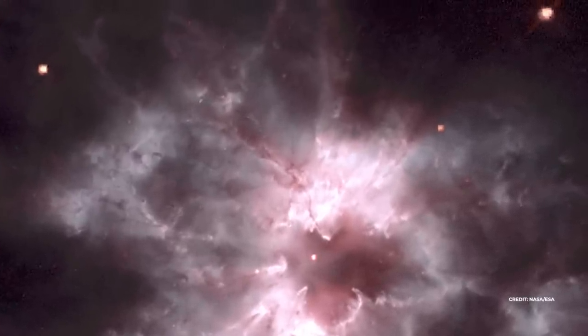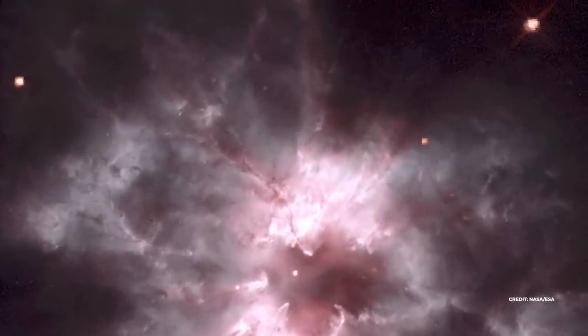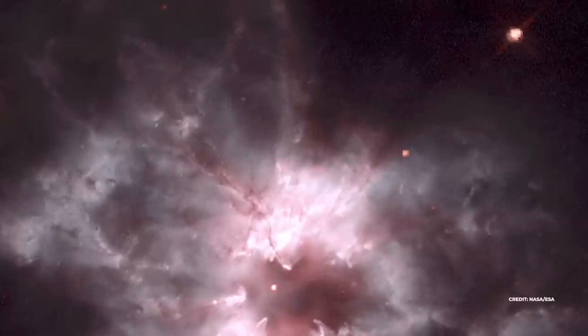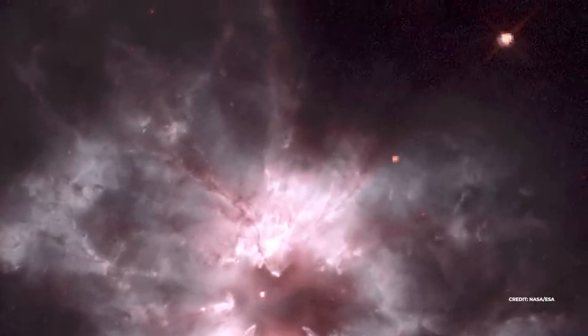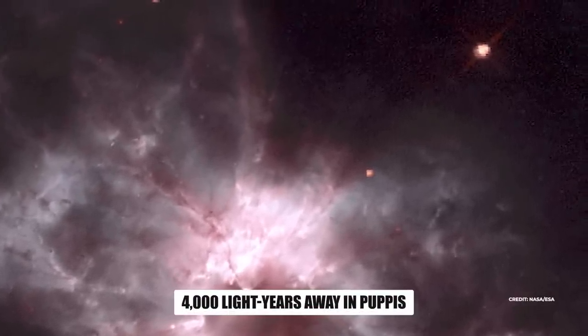NGC 2440 is surrounded by a much larger cloud of cooler gas that can only be seen with infrared telescopes. The bright nebula burns from ultraviolet radiation from the blazing star. NGC 2440 is 4,000 light years away in Puppis.